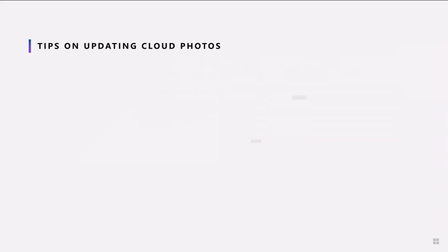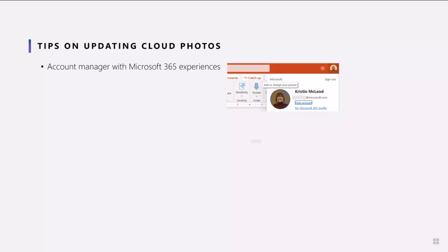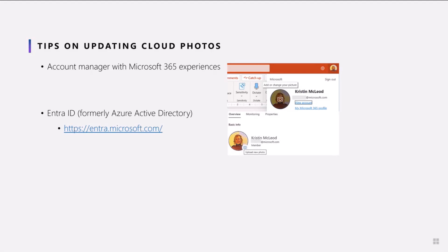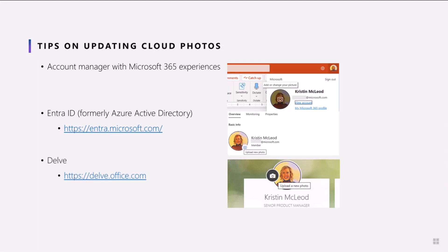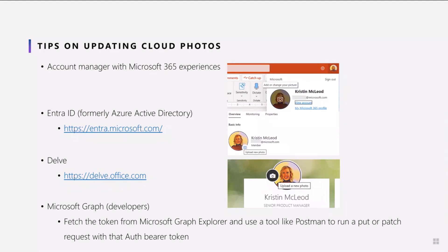Updating photos on the cloud is easier. You can typically go to the account manager within Microsoft 365 experiences, which is typically on the top right-hand corner of the page, as shown here on PowerPoint Online. Alternatively, if you're an enterprise user, you can update your photo on Entra ID. Or if you're an enterprise user and your company has a license for Delve, you can update your photo there. Also, for developers, Microsoft Graph can be used as well.